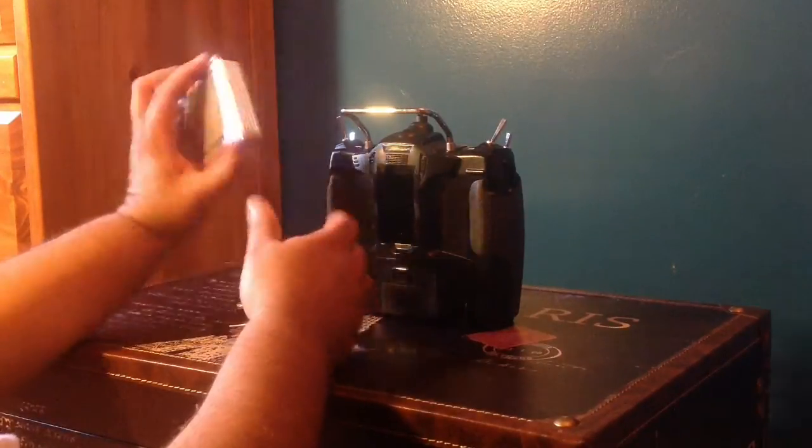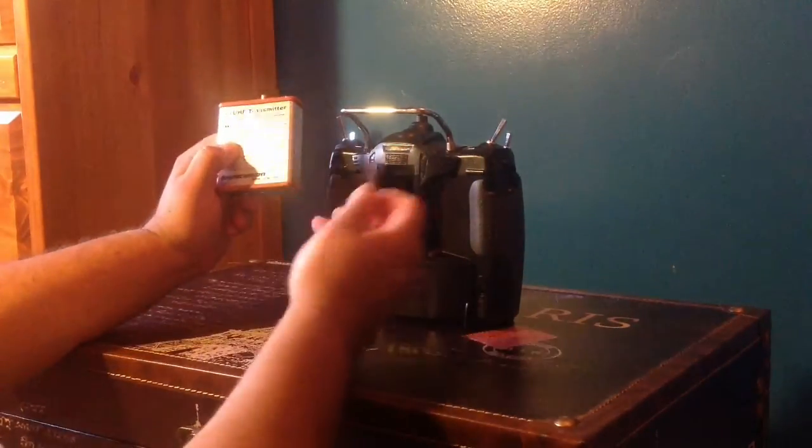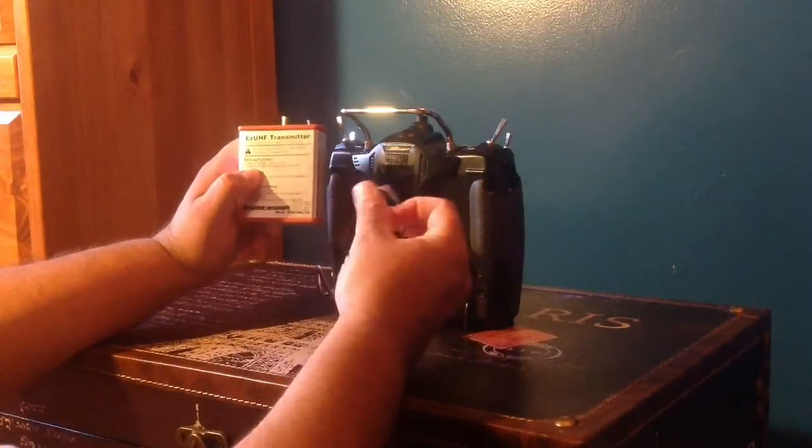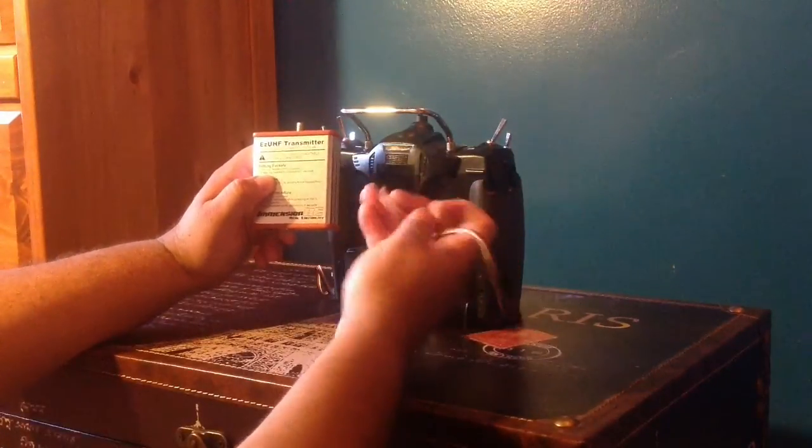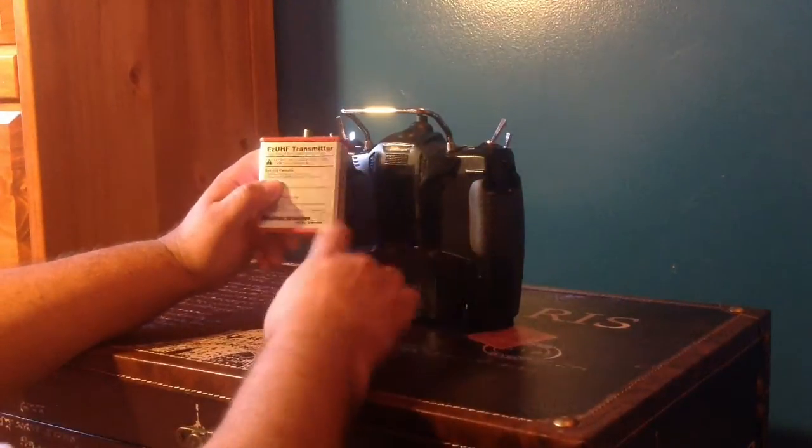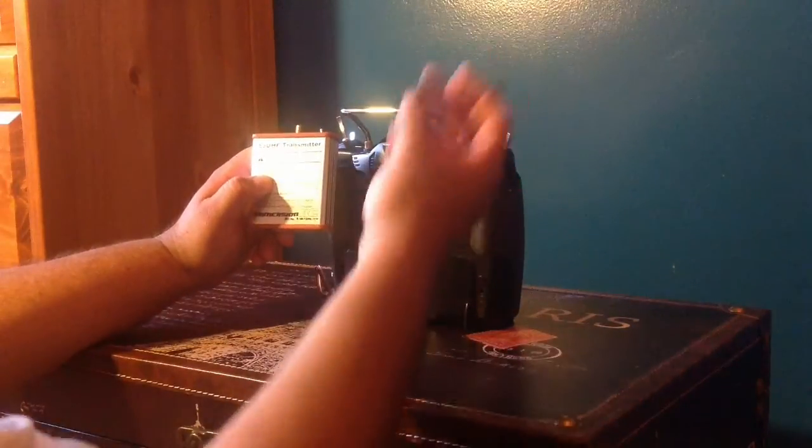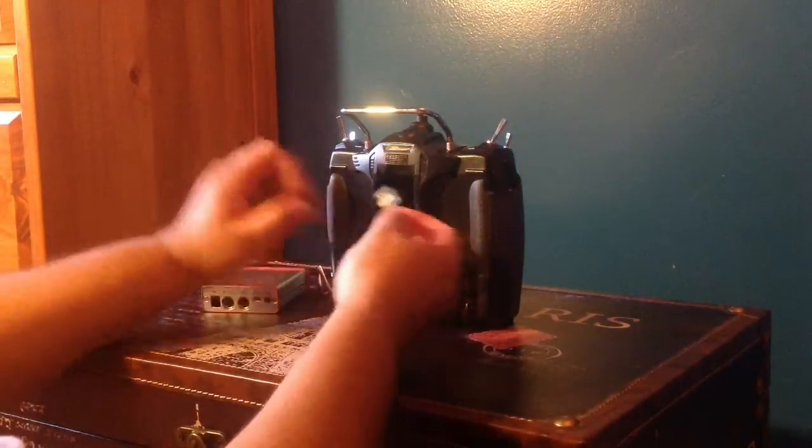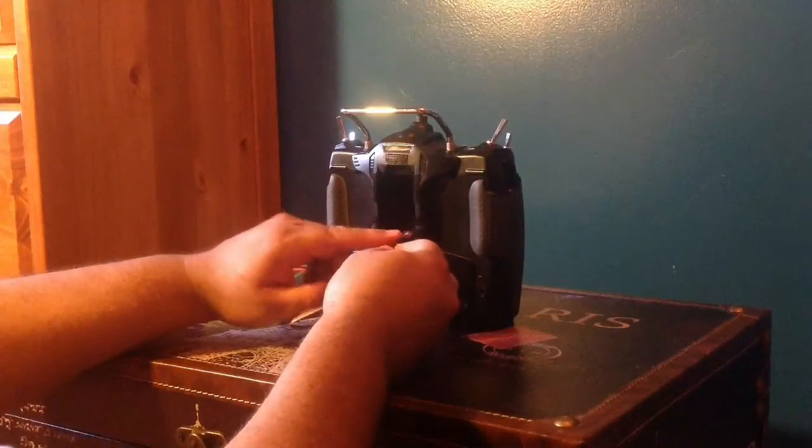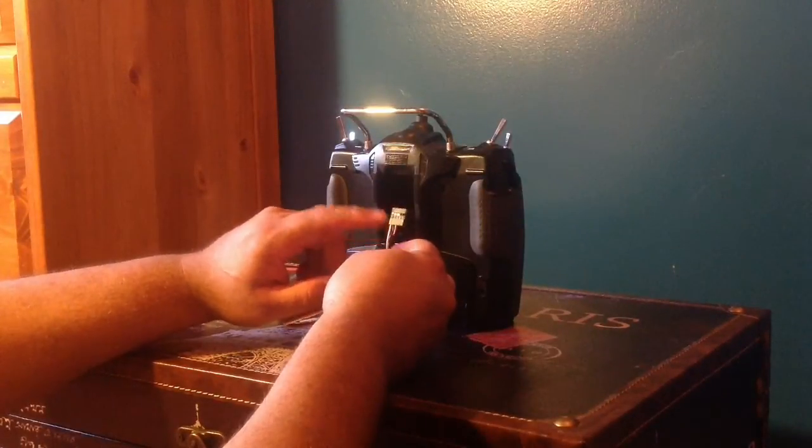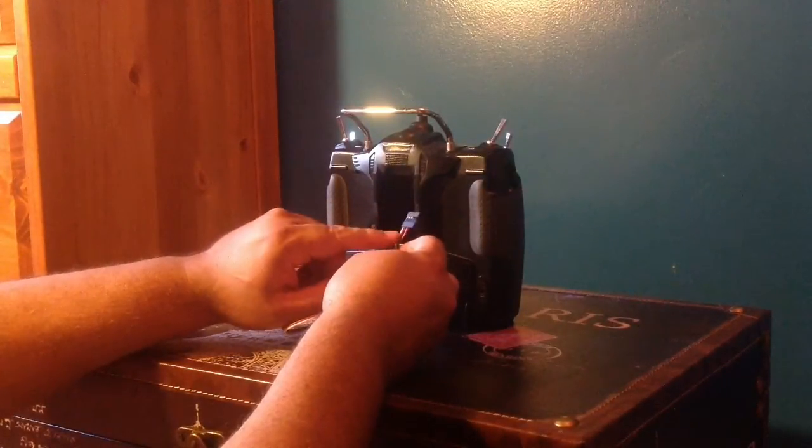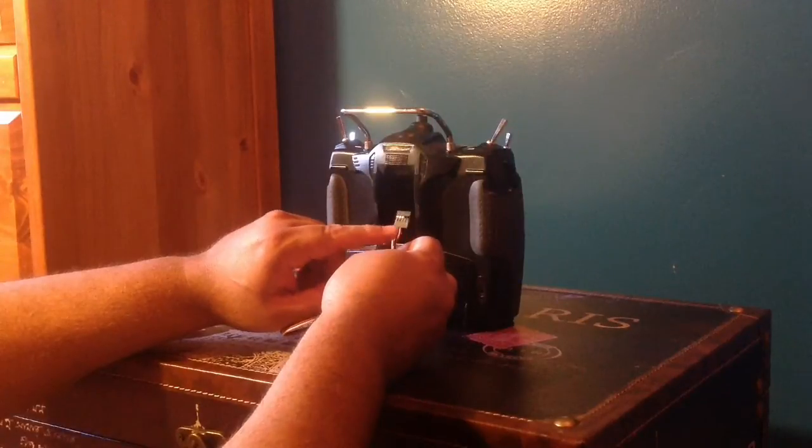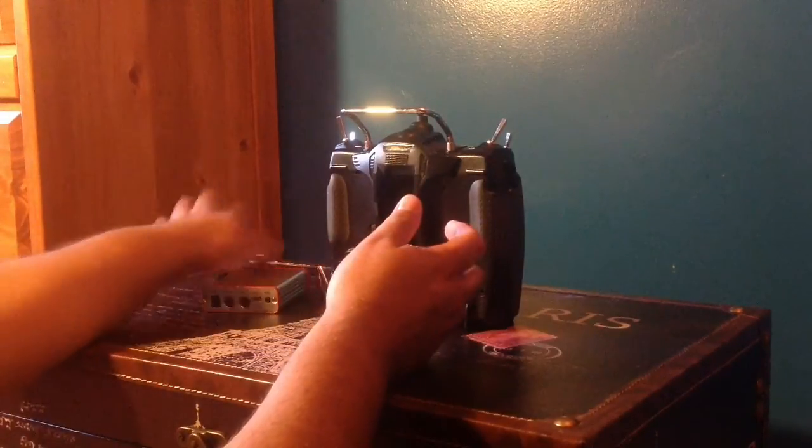When you buy the transmitter, it comes with the JR style plug and also the Futaba, but we're going to use the JR style. If you look at the order here, it's signal, ground, and power, so we have to switch around the cable from power and ground.